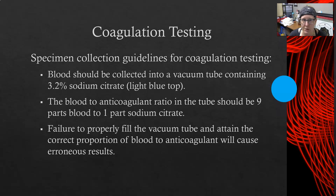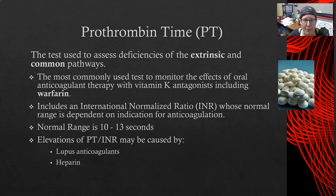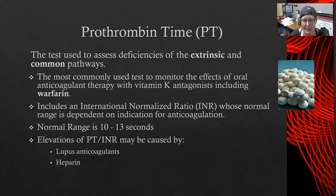The prothrombin time (PT), also known as PT/INR, is the test used to assess deficiencies in the extrinsic and common pathways — the extrinsic pathway being that very short one with tissue damage activation. It is the most commonly used test to monitor the effect of oral anticoagulant therapy, specifically vitamin K antagonists including warfarin or Coumadin, which are oral anticoagulants. These are more traditional drugs that have been on the market for decades and are very affordable and effective.